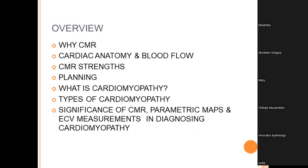We'll cover why we should do cardiovascular magnetic resonance imaging in people with cardiomyopathy, our understanding of cardiac anatomy and blood flow, and the strengths of CMR including basic planning. We'll then move into cardiomyopathy types and the significance of CMR with parametric maps — T1, T2, T2-STIR — and extracellular volume measurements in diagnosing cardiomyopathy.